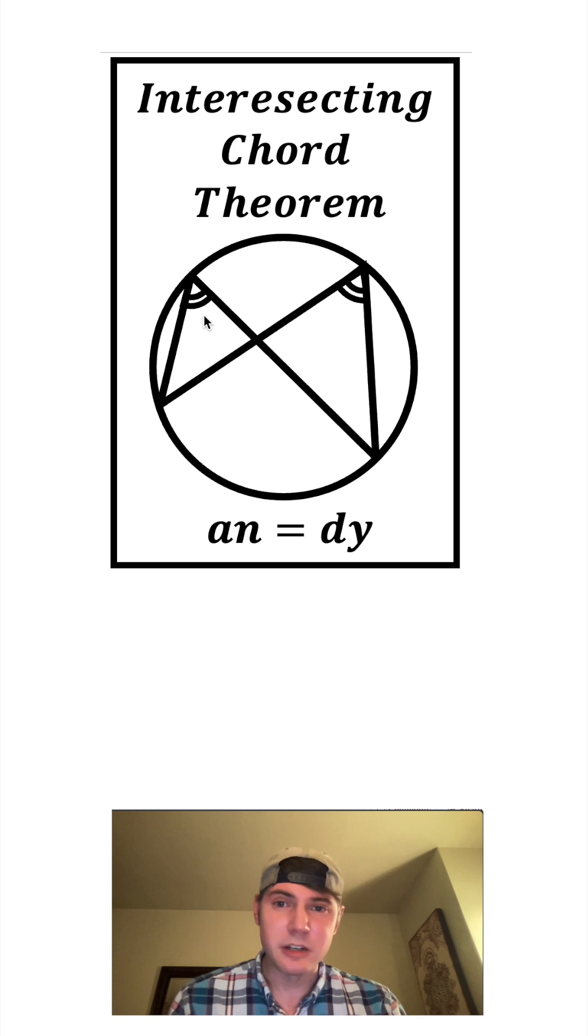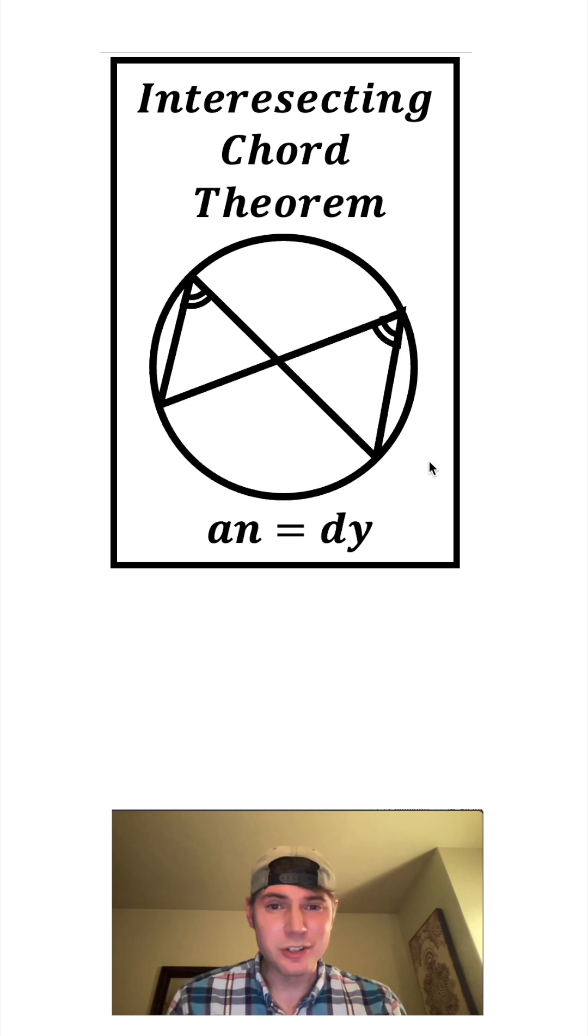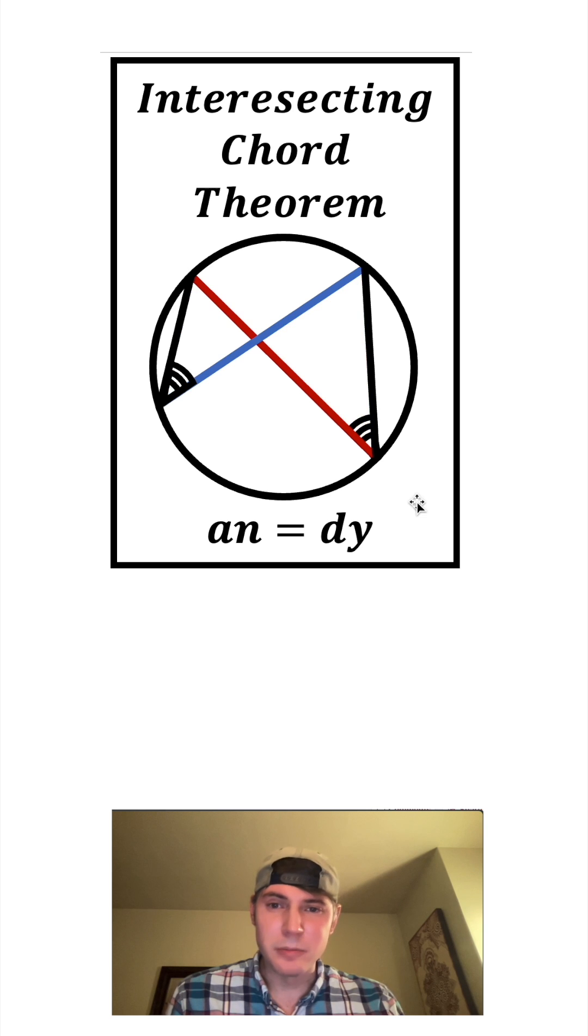So all of these angles are congruent to this angle right here. This one too. And then similarly, these two angles would also be equal because they subtend the same arc right here. This angle and this angle subtend the same arc.